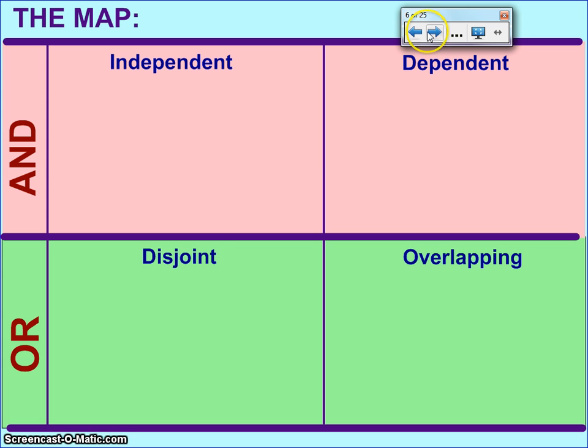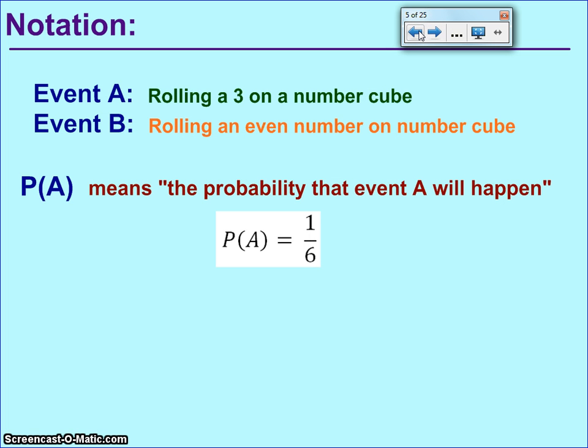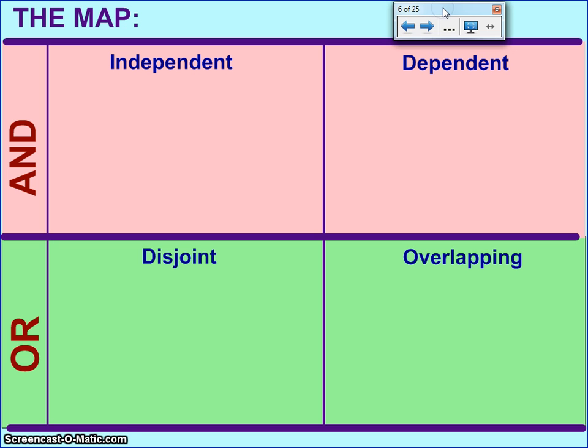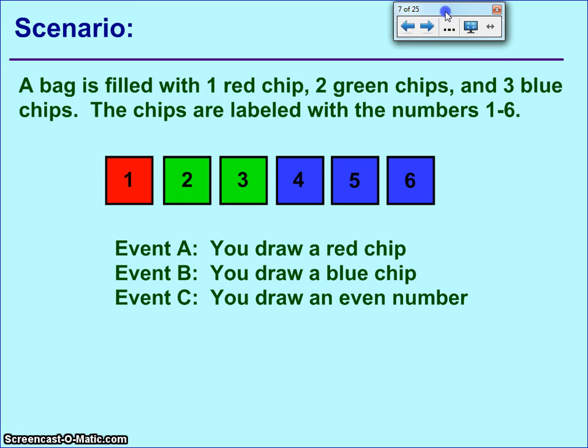Now, once we have probability notation like that, we're going to string those probabilities together using and or or statements. And this is the map that we're going to use today. So I would take a moment, pause and play, and just copy down this map here. Basically, you have to decide which quadrant you're going to be in. Each quadrant is going to have different situations and different formulas for calculating probability. The pink stuff is for and, the green stuff is for an or statement. I know and is on top, but I'm going to start with ors because I think they're a little easier.